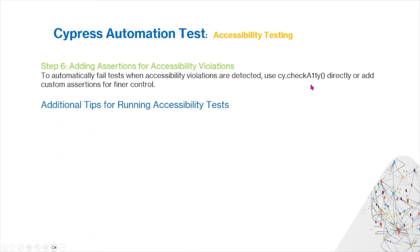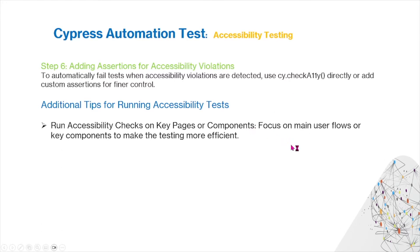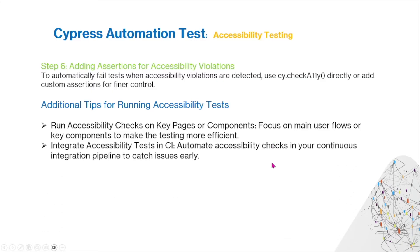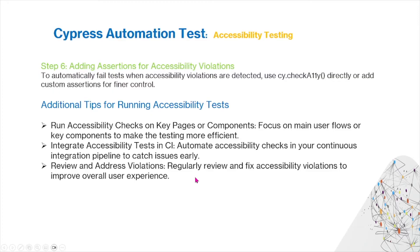Some additional tips for running accessibility tests: run accessibility checks on key pages or components, and focus on main user flows or key components to make testing more efficient. Integrate accessibility tests in a CI pipeline to automate checks and catch issues early. Regularly review and address accessibility violations to improve overall user experience.